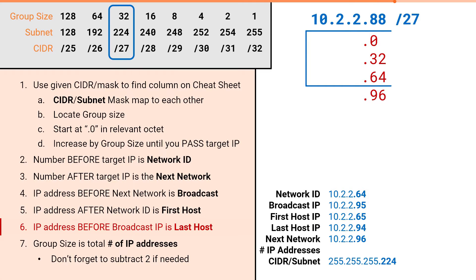Finally, our group size is our total number of addresses. Our group size was 32, which means there are 32 total addresses in a slash 27. If we were being asked for the number of usable addresses, we would simply subtract two, giving us 30 usable addresses in a slash 27.